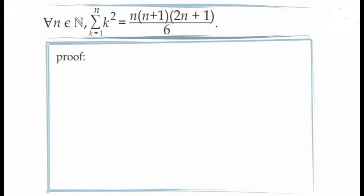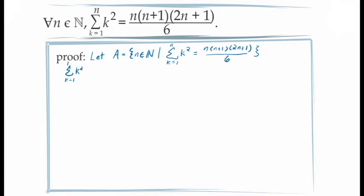Let's prove that this formula holds for all values of n in the natural numbers. We consider the set A of those values of n for which our formula holds, and we have to prove that A is an inductive set that contains the number 1. Considering the case where n equals 1, the sum as k goes from 1 to 1 of the sequence f of k equals k squared is just the first term, 1 squared, which is 1. We can express 1 as 1 times 2 times 3 divided by 6, which equals 1 times 1 plus 1 times 2 times 1 plus 1 divided by 6 — exactly n times n plus 1 times 2n plus 1 over 6 when n equals 1. This proves that 1 is in the set A.